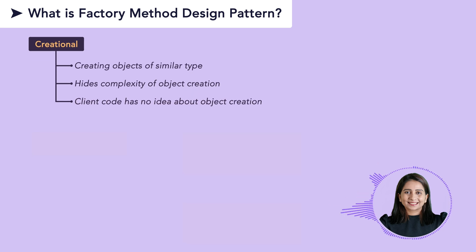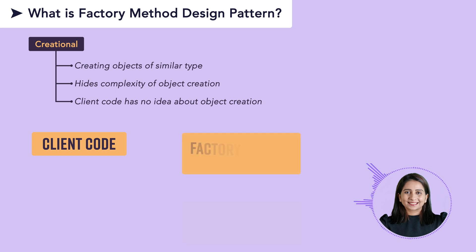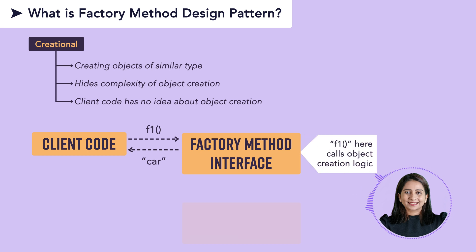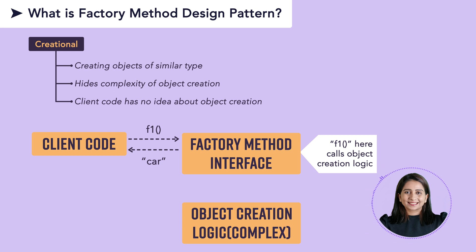Let's try to understand this using a box diagram. Let's say that this is your client code — it could be any other application or module calling your code — which calls an interface or a function that resides under a factory method interface. This client code will just call that function, let's call it f1, which is exposed by this factory method interface. Now f1 is going to return the instance or object that client code is expecting. However, the beauty here is that this interface does not expose to the client the complexity in creating that object, because this interface does not implement how that object is created. That implementation is deferred to the classes which implement the actual logic to initialize those objects.